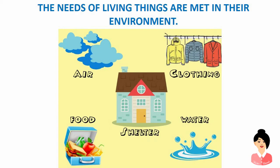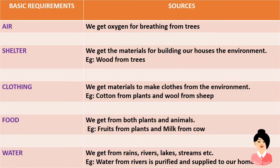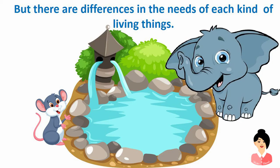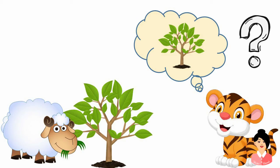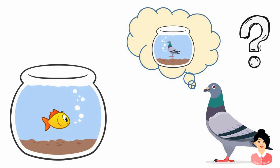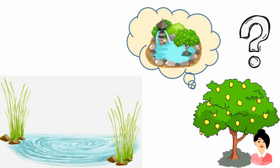The needs of living things are met in their environment. Everything we require, we get from nature. But there are differences in the needs of each kind of living thing. An elephant requires a huge quantity of water but a mouse doesn't require the same quantity. A butterfly feeds on the nectar of a flower — can a frog also feed on the same? No. A sheep eats grass — can a tiger eat grass? A fish lives in water — can a pigeon survive in water? Aquatic plants grow in water — can a lemon tree grow in water?